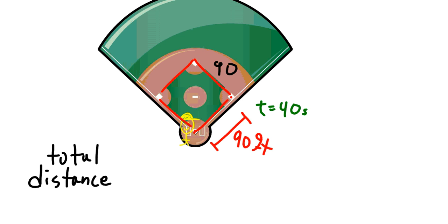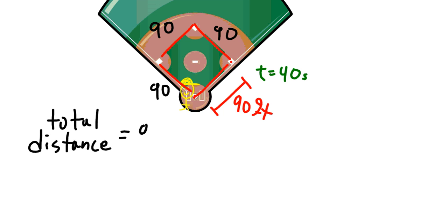So if it's 90 feet from home to first, it's another 90 feet, plus another 90 feet, plus another 90 feet. And so in this case, the total distance is 90 feet times four, which is 360 feet.